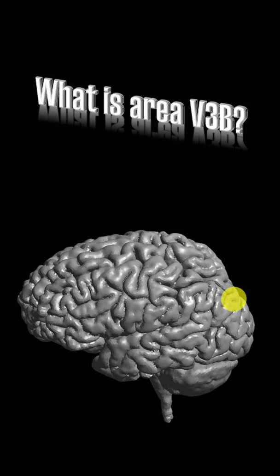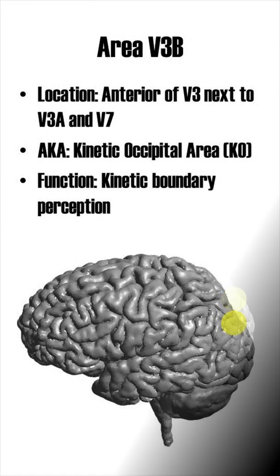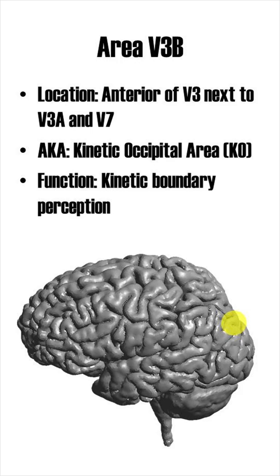What is area V3b? Visual area 3b is located anterior of V3 and it neighbors visual area 3a and V7. It is sometimes called the kinetic occipital area, and its main function is the perception of kinetic boundaries.